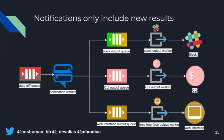From that queue, we have a notification worker that takes all the data and outputs it in whatever format you want. We currently use Slack — both to start the workflow and to receive all the output. But this can easily be changed to a CLI, a website, or anything else. The concept is very extensible and all components are mutually separated.